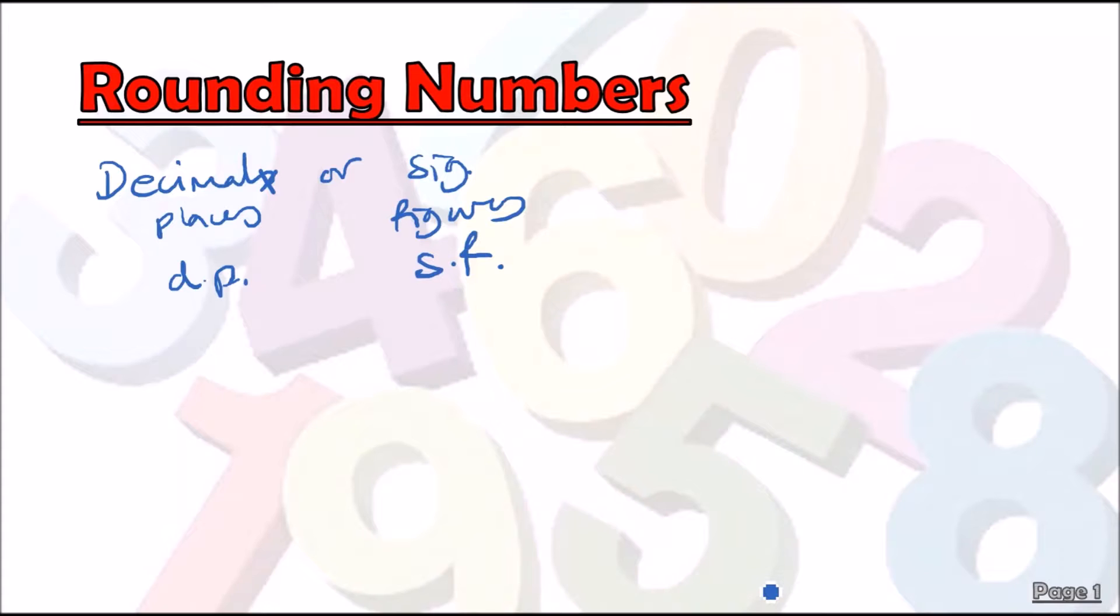For example, the question might ask us what is 8.45639 to two decimal places? The way this works, we always look at the two decimal places here. We look at the last digit, and then the decider is always going to be the one after it, so this would be the decider.